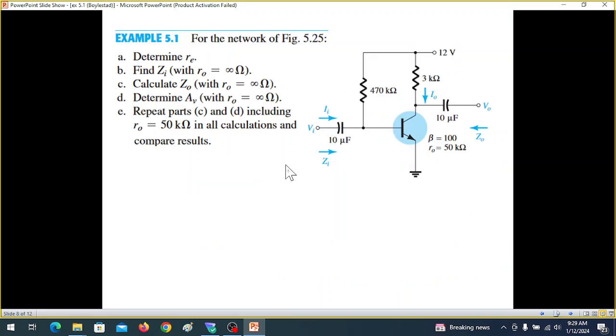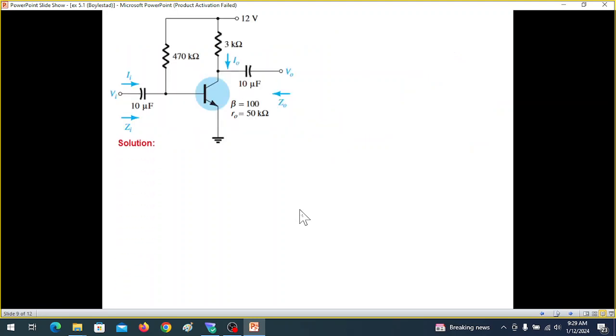Now we come to the question for the network of figure. You can see this is the common emitter mode, emitter is connected to ground. And we have to calculate these five parameters. We'll deal them one by one. The first thing is determine RE. Now recall that for RE the formula was 26 millivolt divided by I capital E. That means we have to get the value of IE from the DC circuit, so we are keeping the DC voltage.